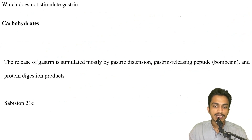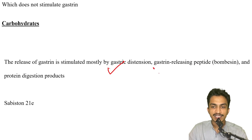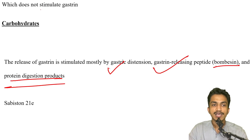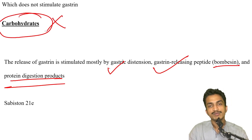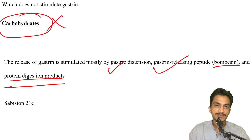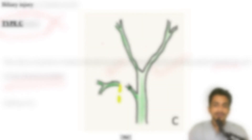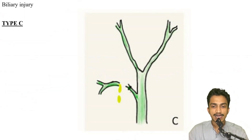What does not stimulate gastrin — straightforward line from Sabiston: gastrin is stimulated by gastric distension, gastrin-releasing peptide (bombesin), and protein digestion products. Carbohydrates do not stimulate gastrin; protein stimulates more. So carbohydrates is the answer.